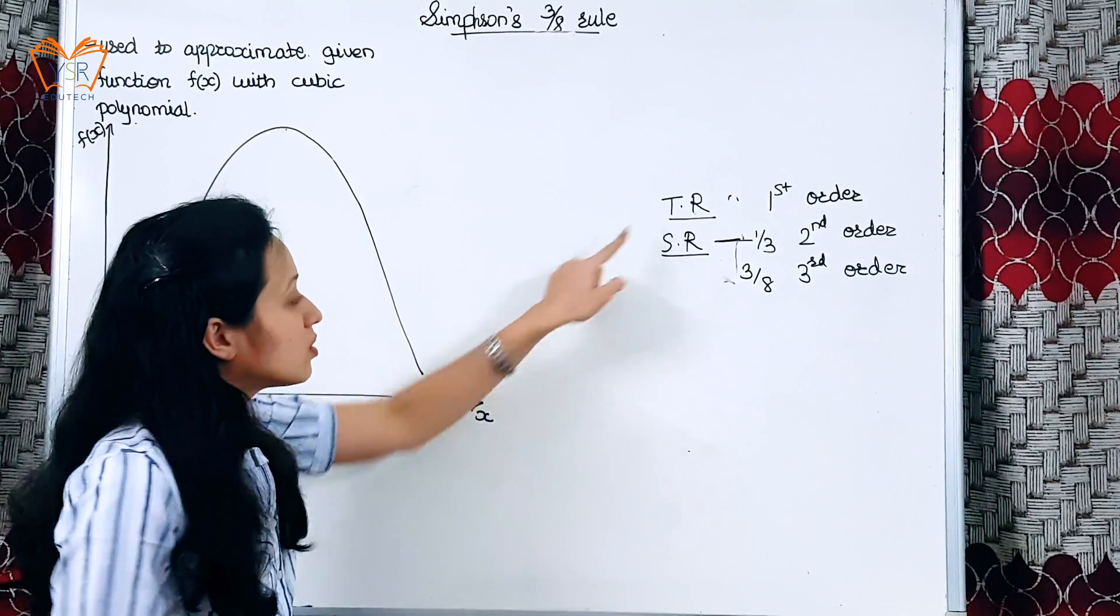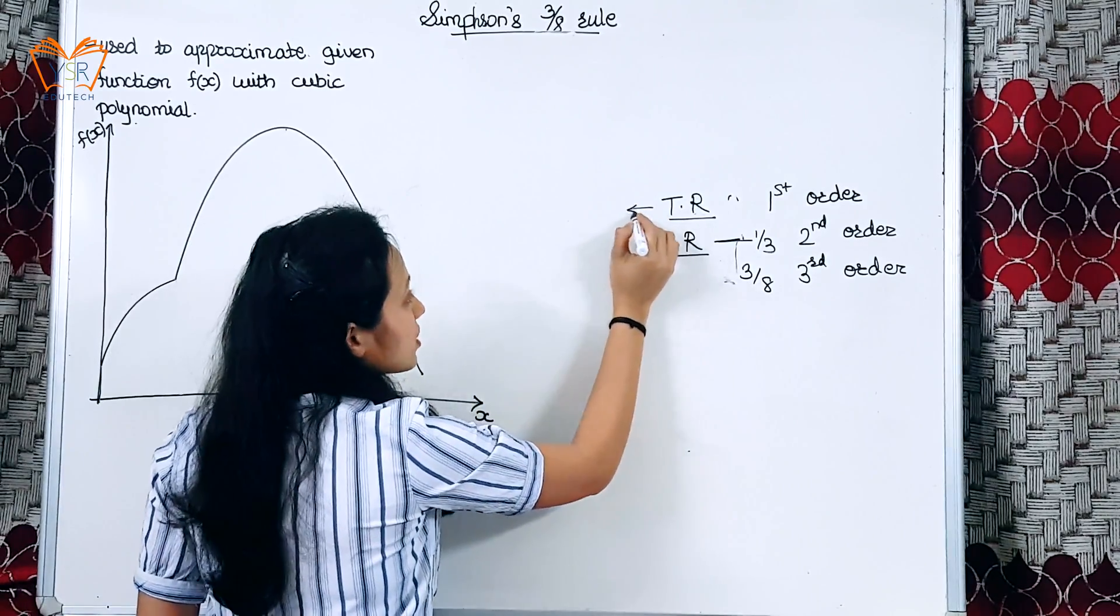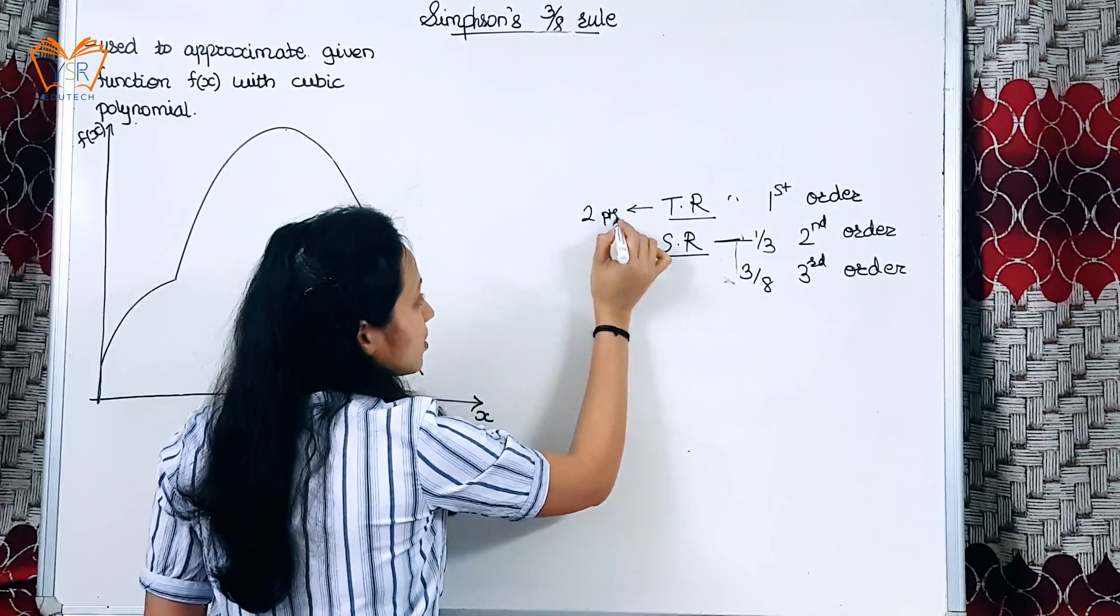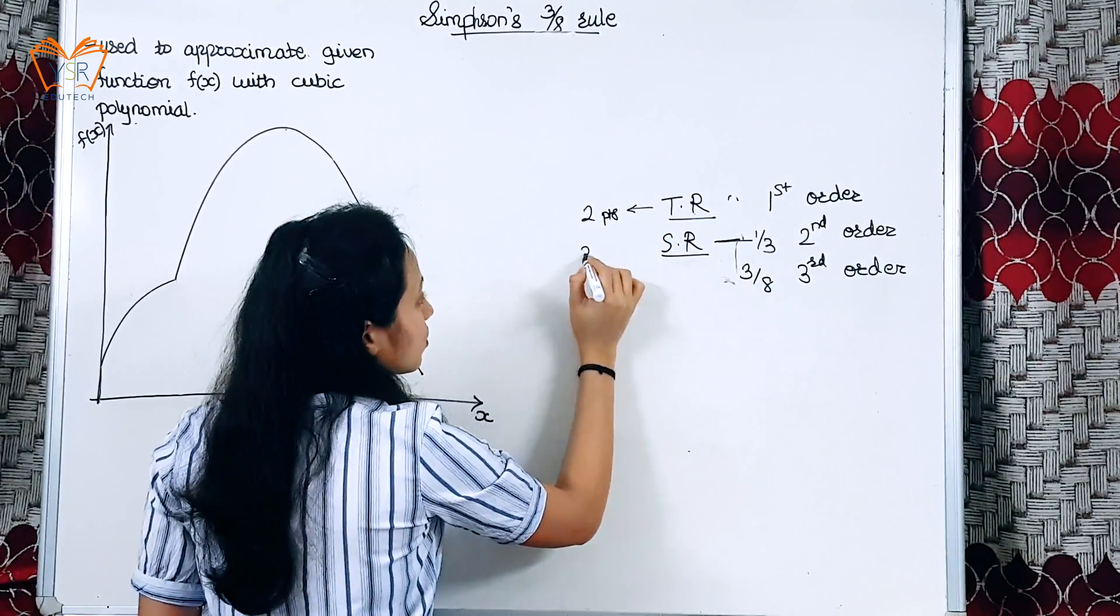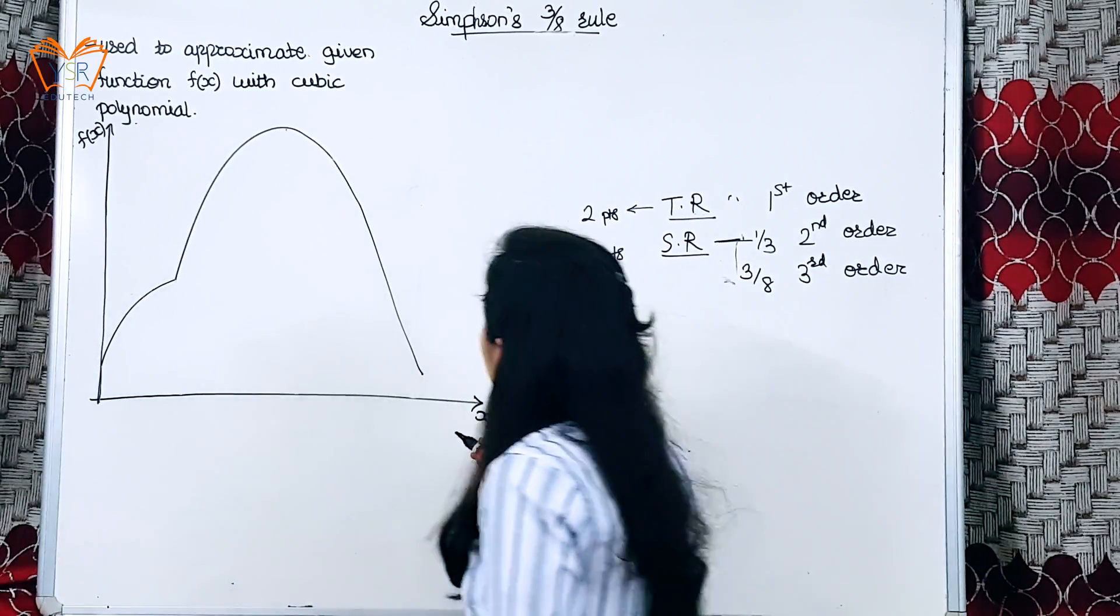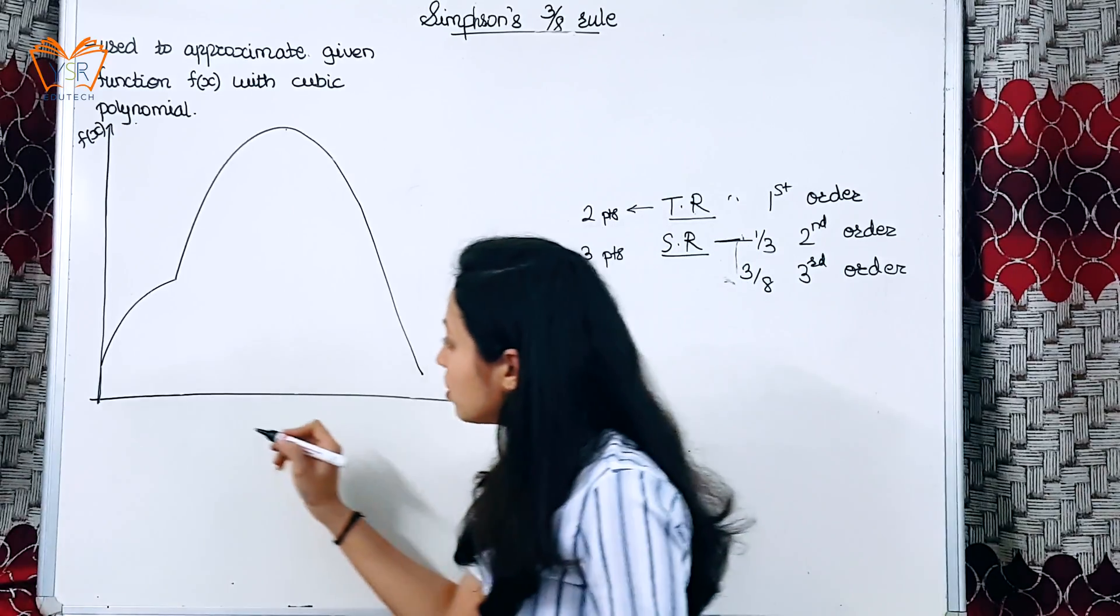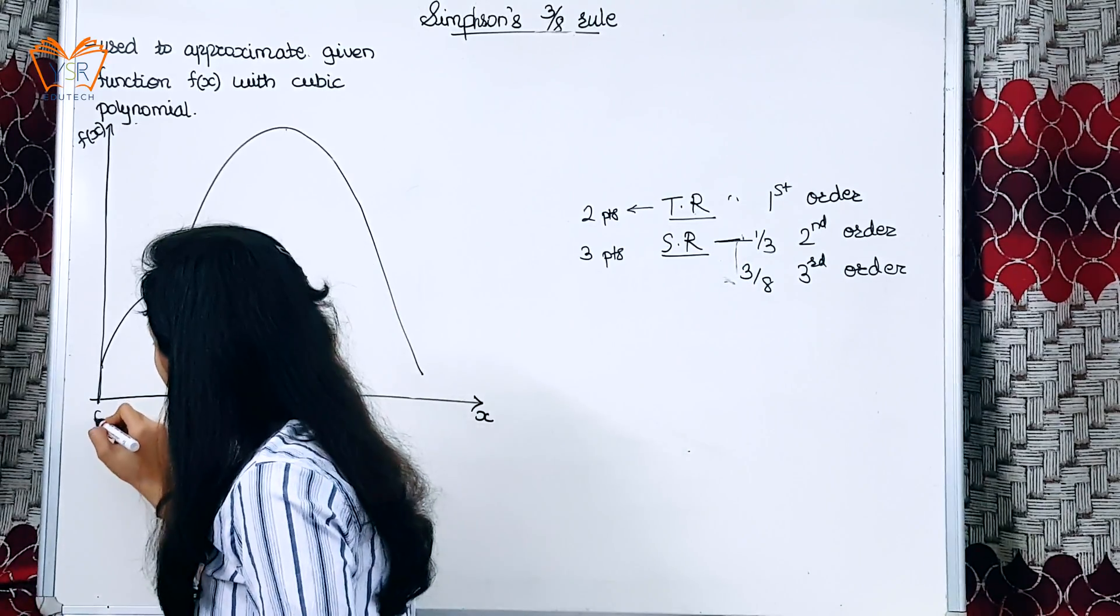We saw in Trapezoidal Rule that two points were used for approximation. For Simpson's one-third rule, three points were used for approximation. For Simpson's three-eighth rule, four points will be used for approximation.